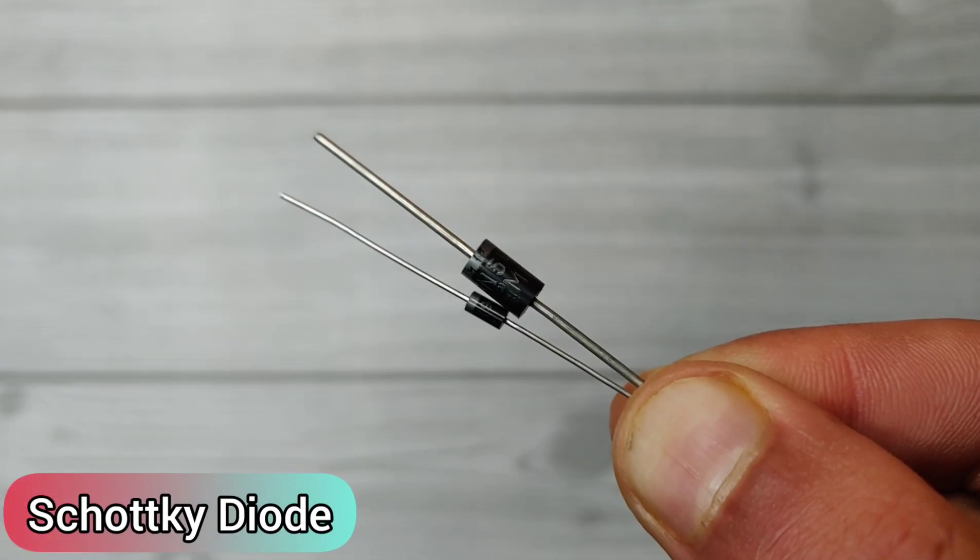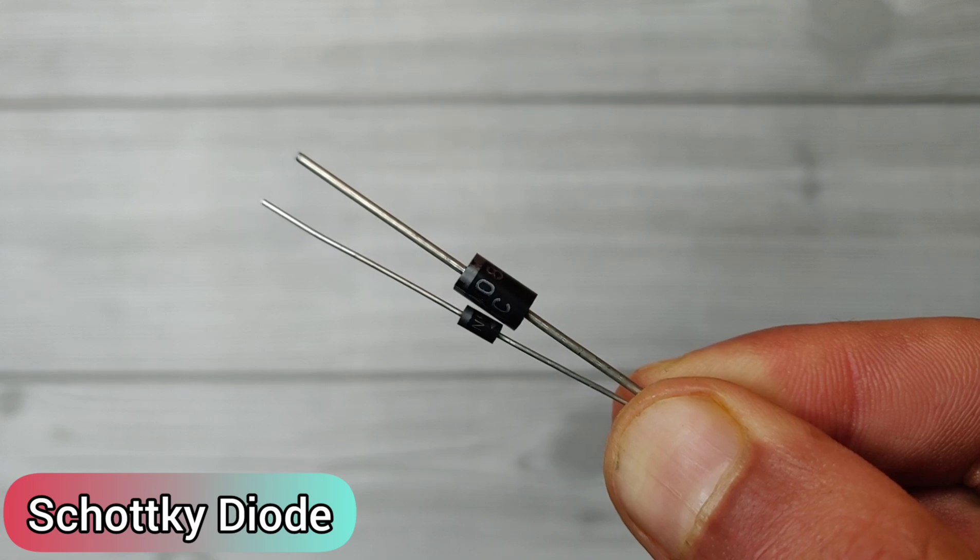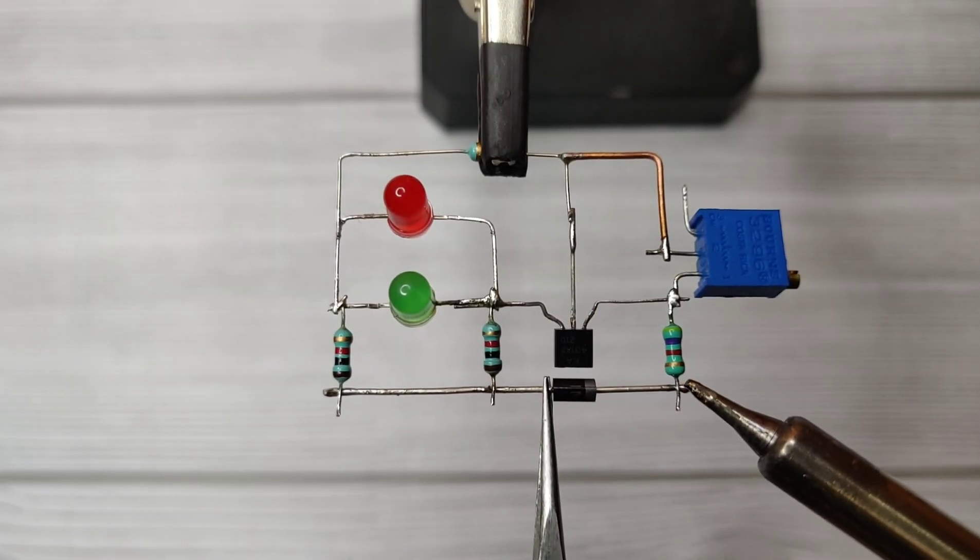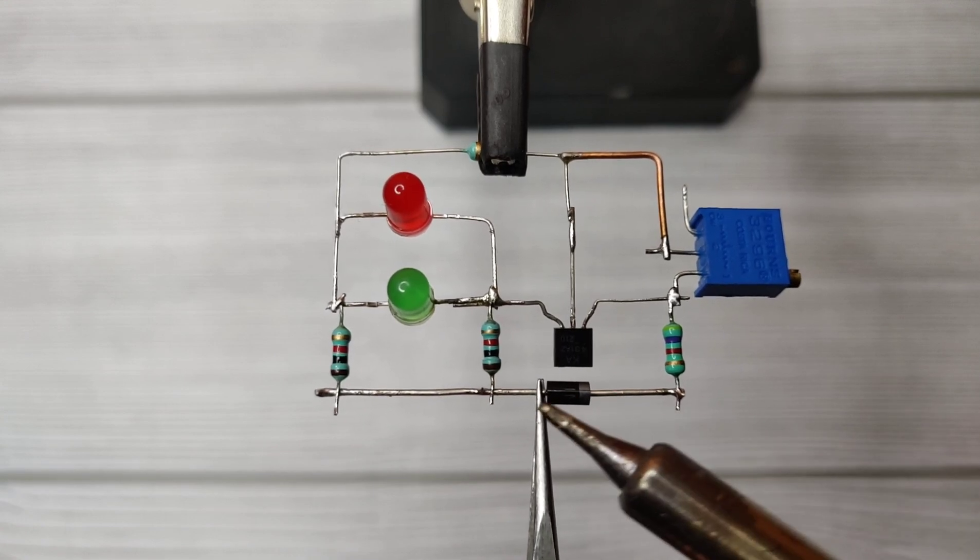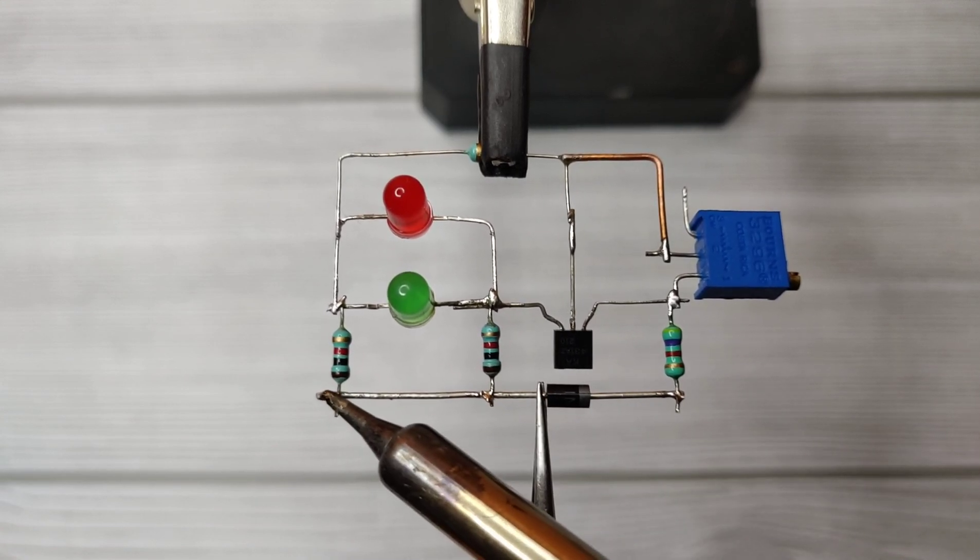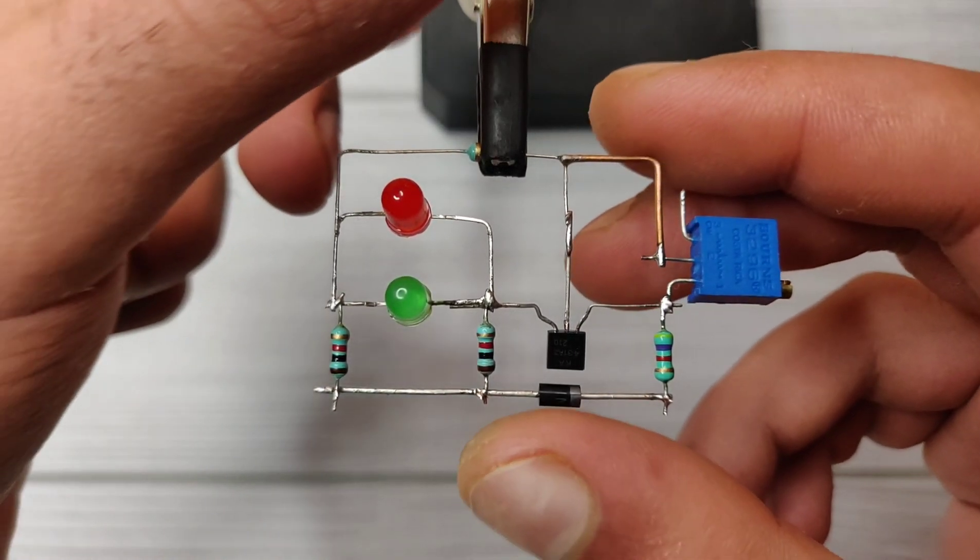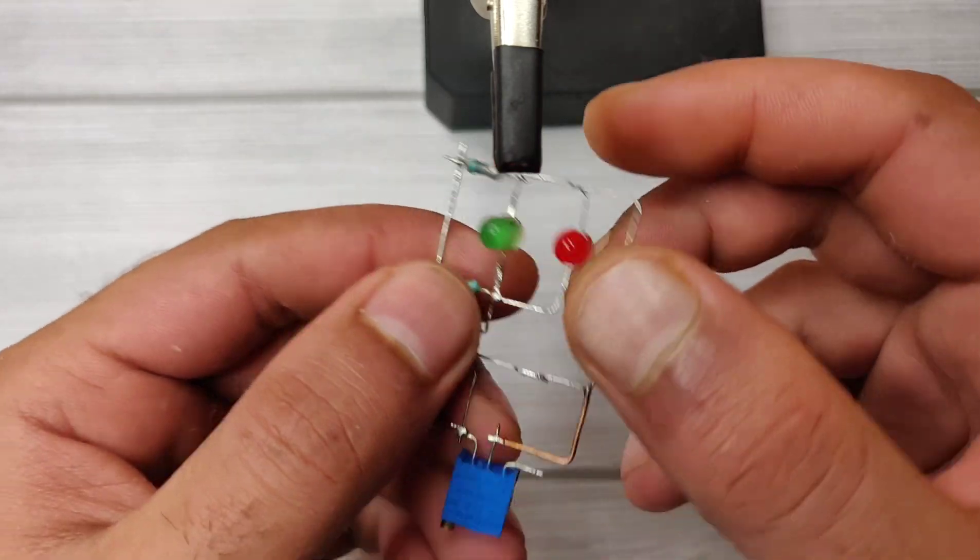Use any Schottky diode between 1 to 3 amperes as per your current requirements. Solder the cathode with the 4.7k resistor and the anode with both 1k resistors. OK, now our circuit is almost ready.